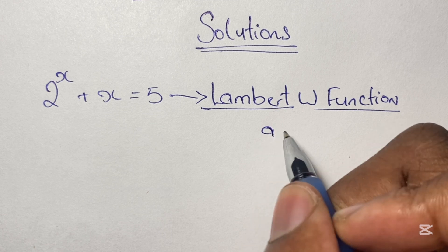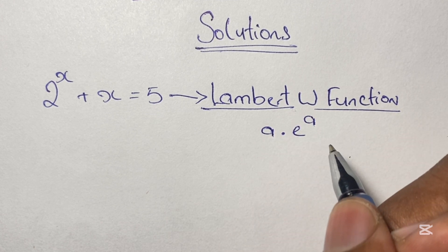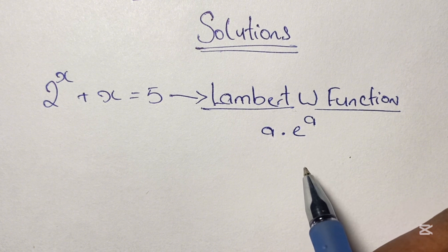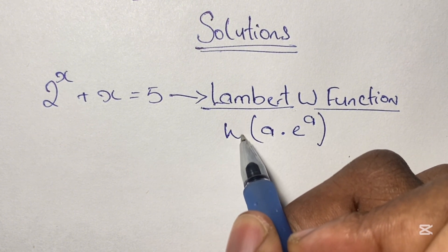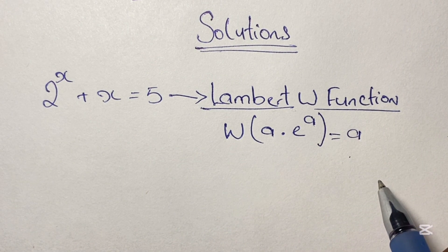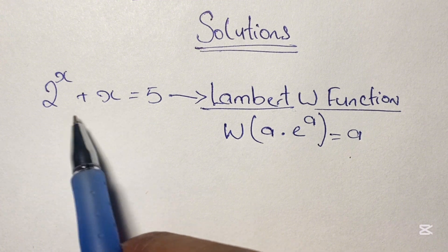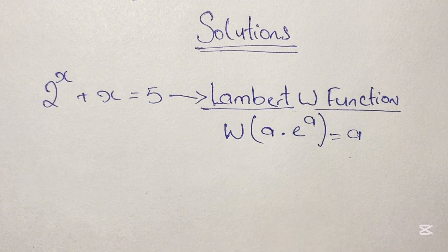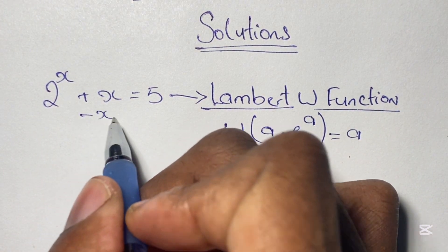How this works is that if we have an expression such as a times e to the power of a, and we apply what you call a W function to this expression, the result is a. So if we can write our equation in the form of a times e to the power of a, then we can apply this W function.